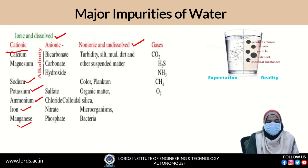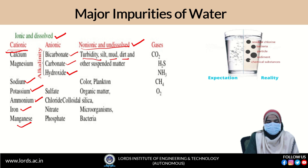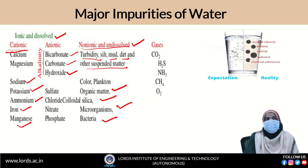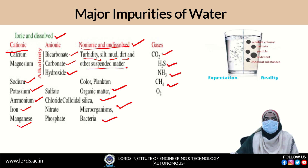Coming towards the anionic impurities. First we will look at alkalinity — it is because of the presence of bicarbonate, carbonate, and hydroxyl ions. Along with that we also have sulfate, chloride, nitrate, and phosphate. Moving towards the non-ionic and undissolved impurities: turbidity, mud, dirt, and other suspended matters are present. Organic matter, colloidal silica, microorganisms, and bacteria are also present. Along with that, few gases are also present as impurities in water — they are carbon dioxide, hydrogen sulfide, ammonia, methane, and oxygen.